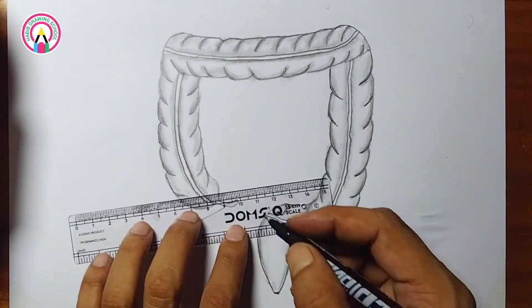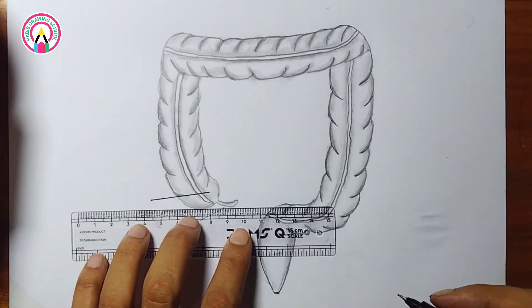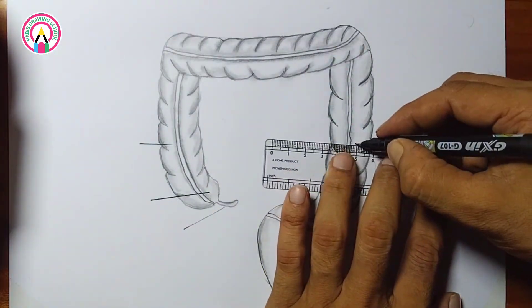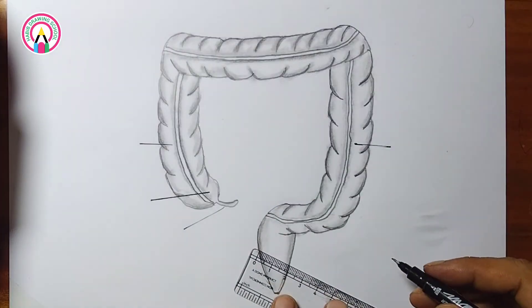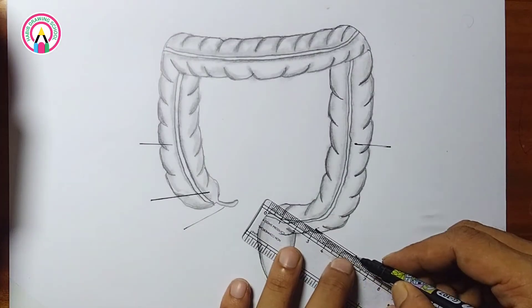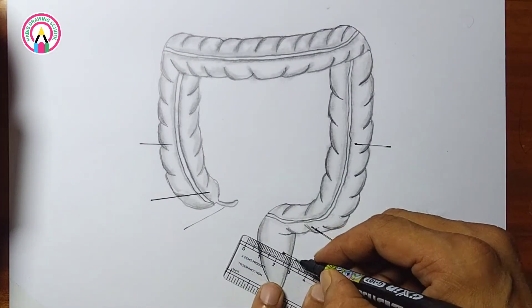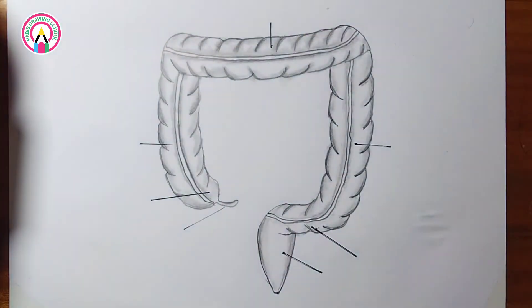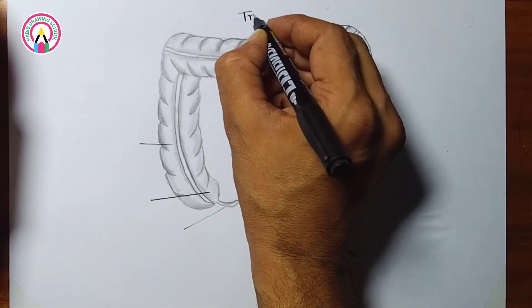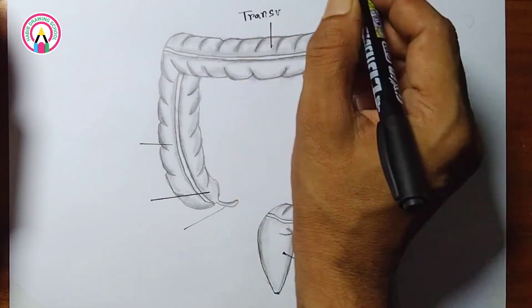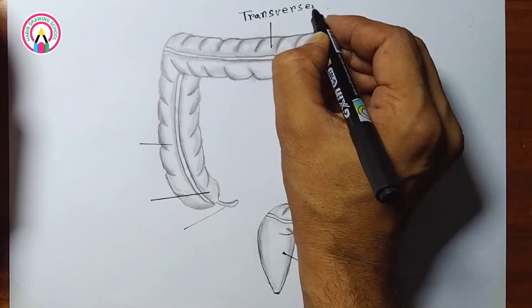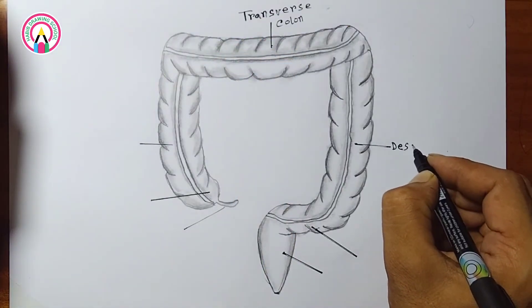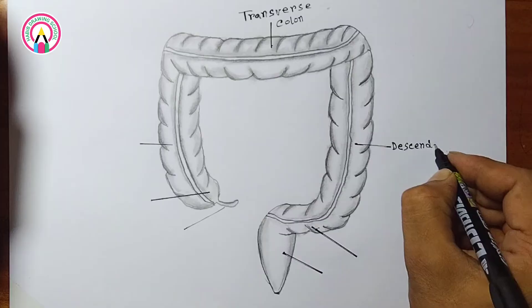Anatomy — one: cecum. A pouch-like structure that receives chyme from the ileum of the small intestine. The appendix is attached to the cecum, though its function is not fully understood.